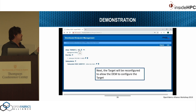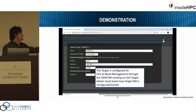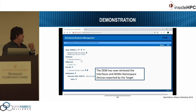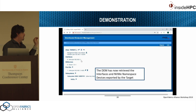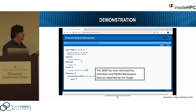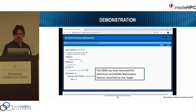Now we reconfigure the target to allow pushing a new configuration. You simply change the management mode from locally managed to out-of-band managed. Once you do that, the console retrieves all information from that target — all the interfaces, all the fabrics supported by NVMe over Fabrics and how they are configured, and all the NVMe namespace devices on that target. We now know about them and can push a new configuration.